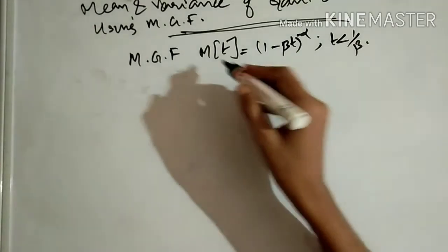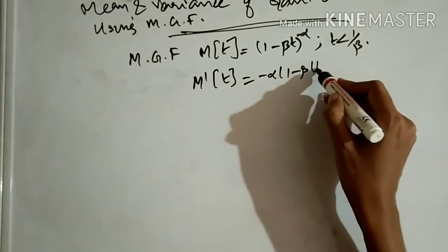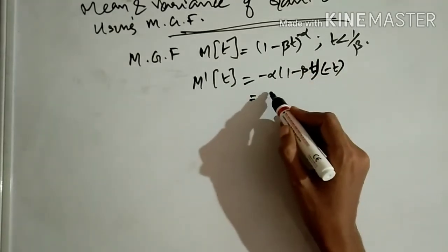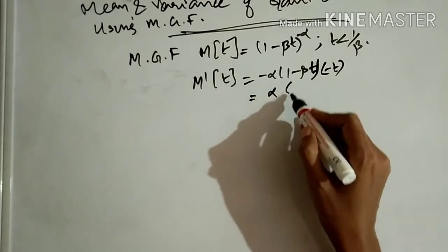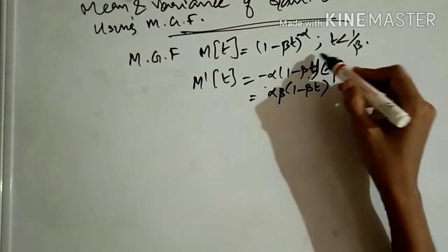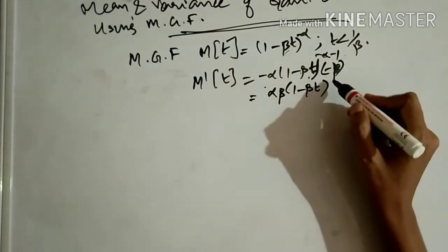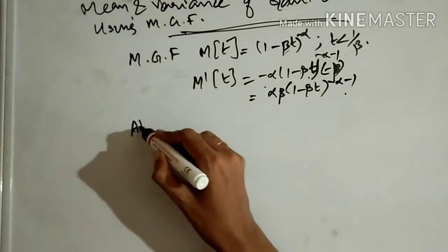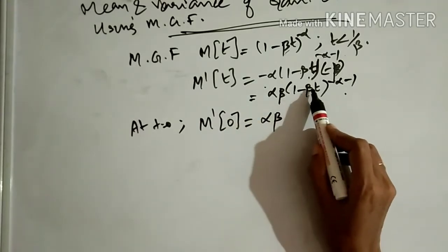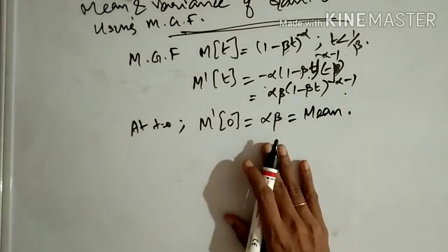To find the mean, differentiate M(t): M'(t) = -α(1 - βt)^(-α-1) times (-β), which equals αβ(1 - βt)^(-α-1). At t = 0, M'(0) = αβ times 1 = αβ. This is the mean — the mean of the gamma distribution is αβ.